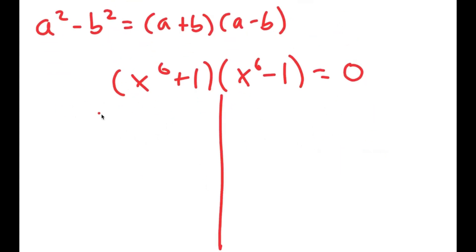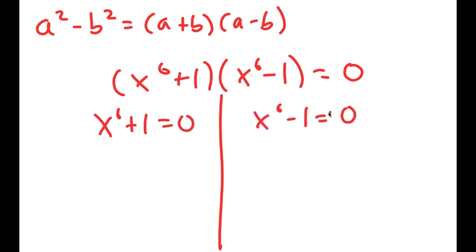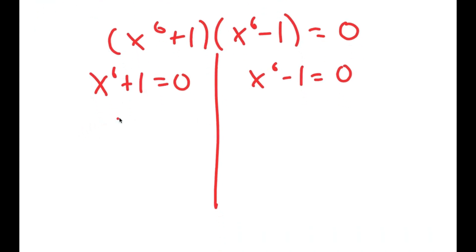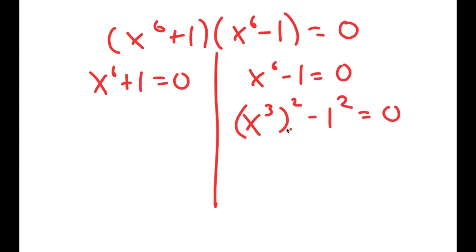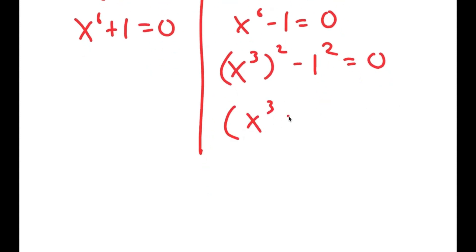This gives me two equations: x to the power of 6 plus 1 equals 0, and x to the power of 6 minus 1 equals 0. Now I'm going to do the same thing again. I'm going to rewrite x to the power of 6 minus 1 equals 0 as x to the power of 3, squared, minus 1 squared equals 0. So I can use this property again and get x to the power of 3 plus 1 times x to the power of 3 minus 1 equals 0.